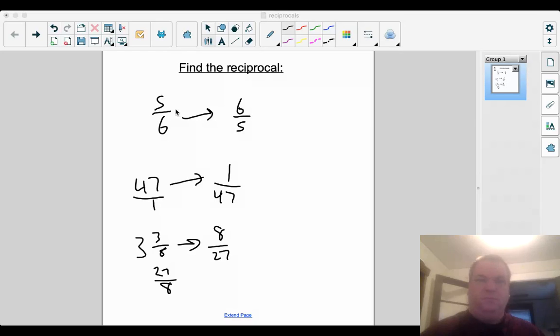Okay. On your homework, you're going to see some questions that look like this. 5/6 times n equals 1. As you figure out what n is. Now, we're going to be talking more about this later. But the idea that this is using is that any time you multiply a number by its reciprocal, you get 1.